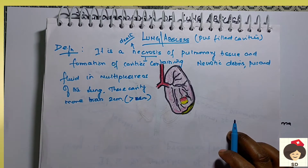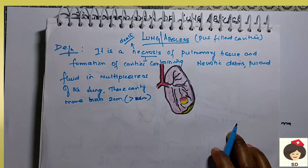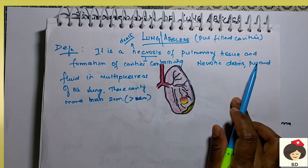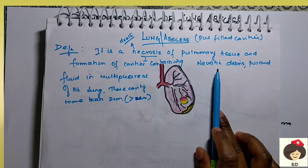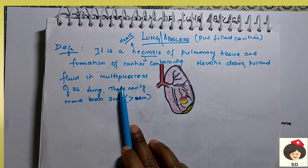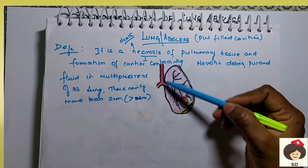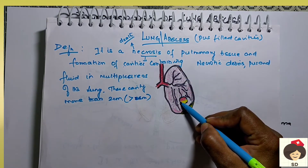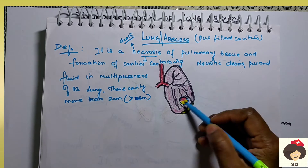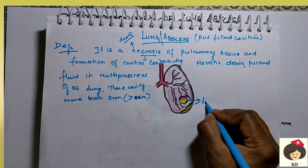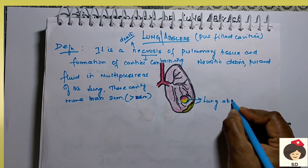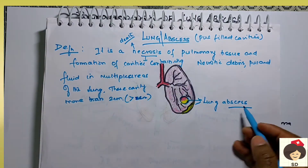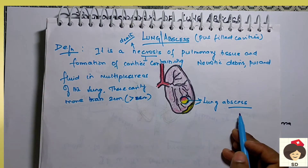Lung abscess is a complication of pneumonia, which we saw in the last class. The definition is: it is a necrosis of the pulmonary tissue and formation of cavities containing necrotic debris, pus and fluid in multiple areas of the lung. In the lung you can see pus formation which forms like a cavity or pocket — that is called lung abscess. Abscess means a localized pus collection in the lung.